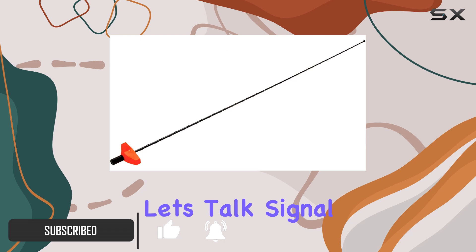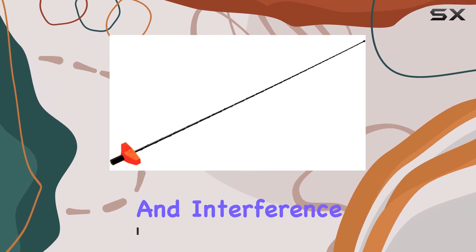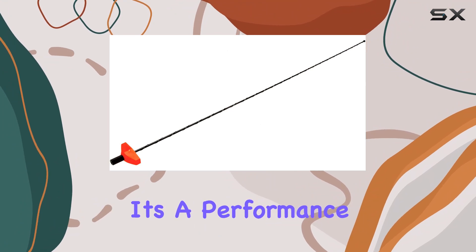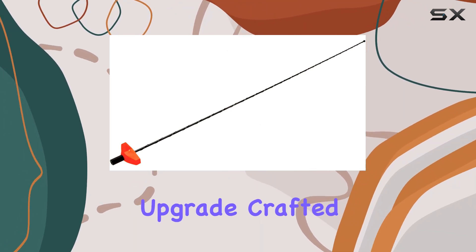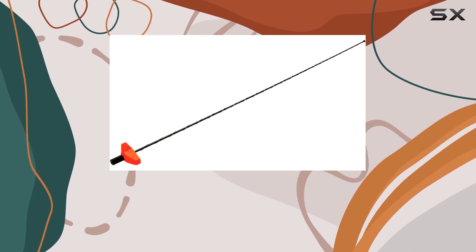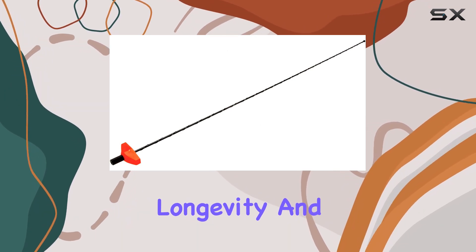Now, let's talk signal strength, clarity, and interference protection. This OE antenna is not just a replacement, it's a performance upgrade. Crafted with durability in mind, it stands up to harsh weather and those relentless car washes, ensuring longevity and reliability.